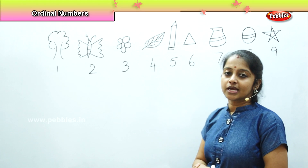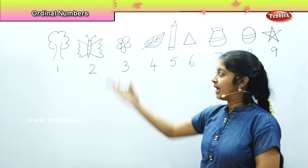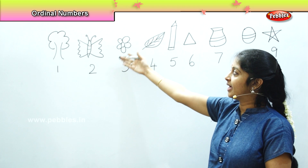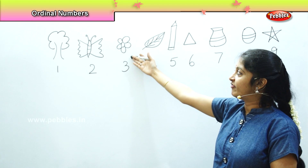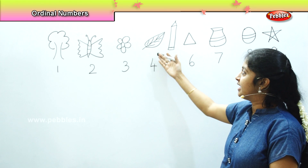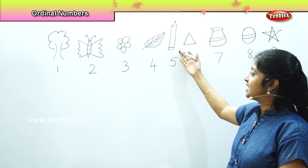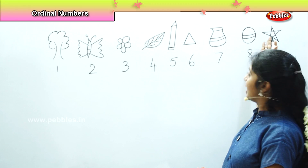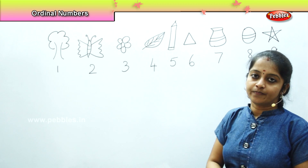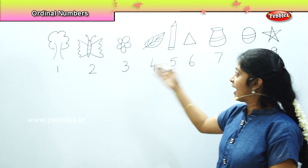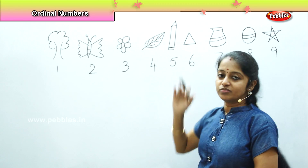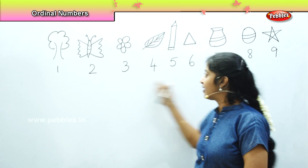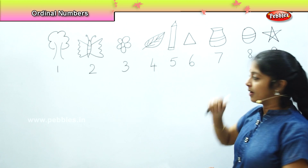So what are the different objects I have? I have a tree, a butterfly, a flower, a leaf, a pencil, a triangle, a pot, a ball, and a star. So I have 9 objects and the numbers are written below them.